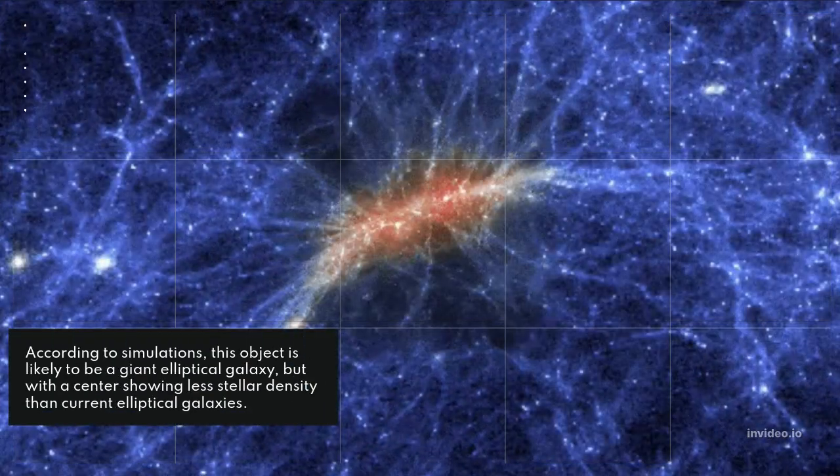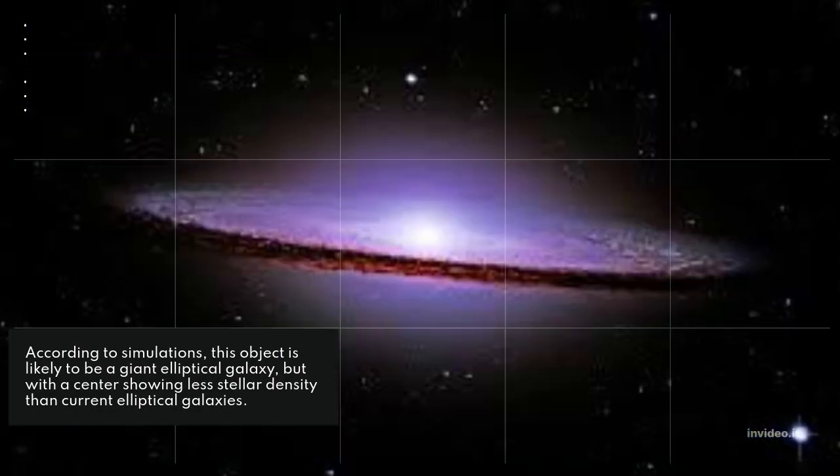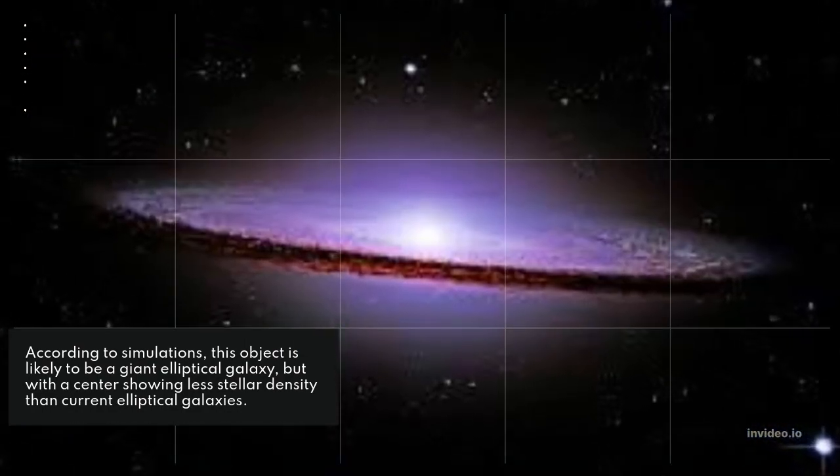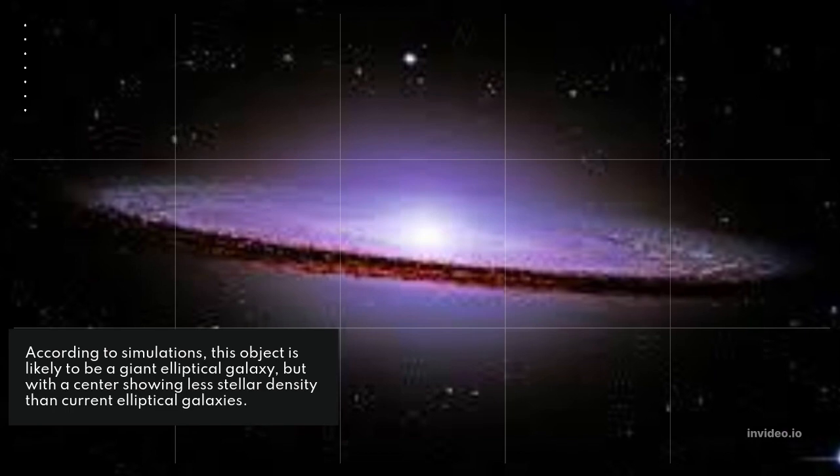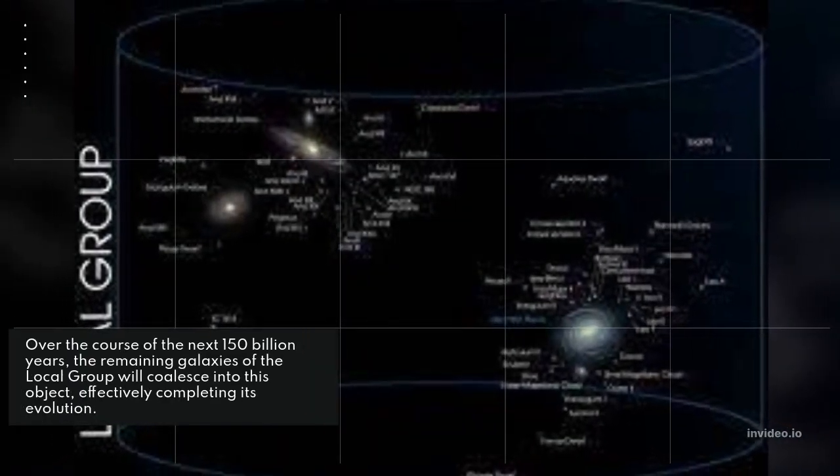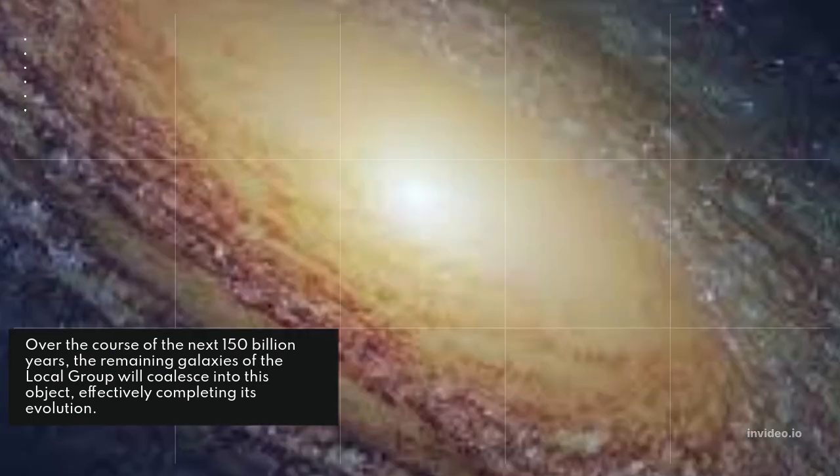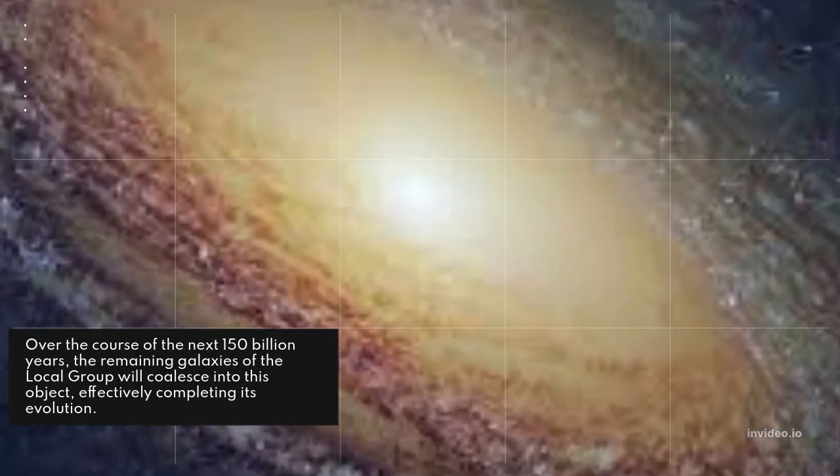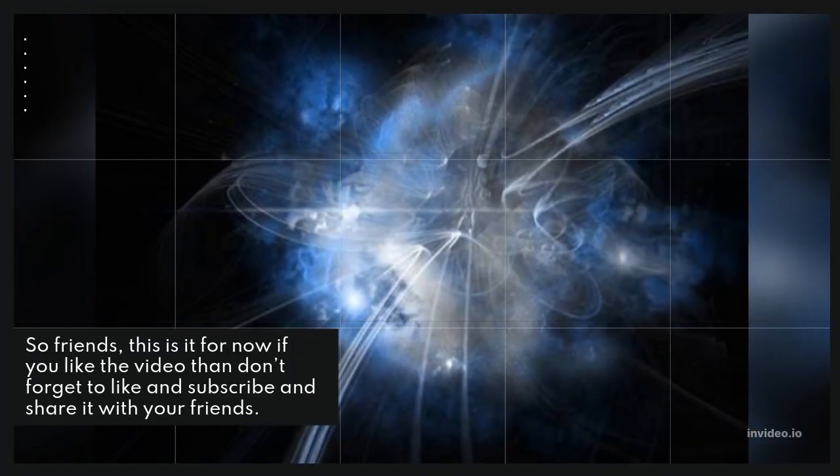According to simulations, this object is likely to be a giant elliptical galaxy, but with a center showing less stellar density than current elliptical galaxies. Over the course of the next 150 billion years, the remaining galaxies of the Local Group will coalesce into this object, effectively completing its evolution.